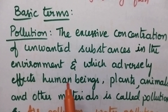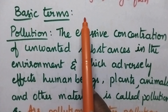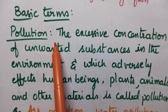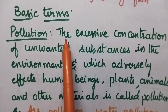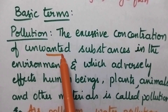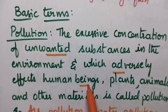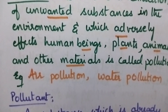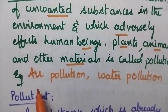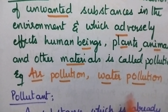Now let us discuss in detail about the basic terms used in environmental chemistry. The first term is pollution. Pollution means the presence of excessive concentration of unwanted substances which shows adverse effects on human beings, plants, animals, and other materials. Depending upon the area, pollution can be classified into air pollution, water pollution, soil pollution, etc.